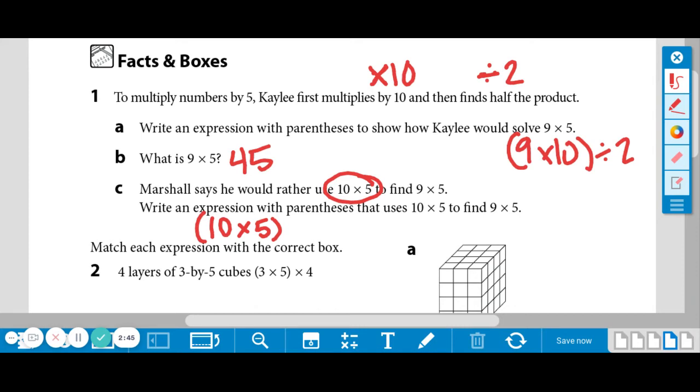So we are one group of 5 over. So we need to take away a group of 5 after he were to multiply that. So that is Marshall's expression. His expression would be 10 times 5 minus 5.